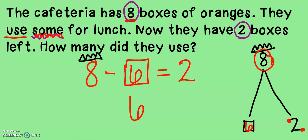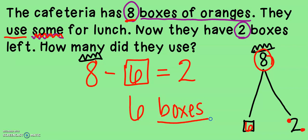Was it six oranges? Let's take a look — six boxes of oranges. You can probably just put "boxes" — that would be a good label. If you want to go above and beyond, you could write "boxes of oranges," but I think that "boxes" would be fine to write for our label.